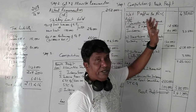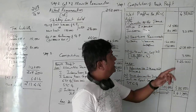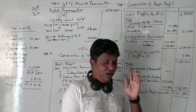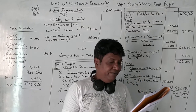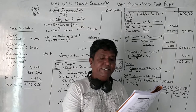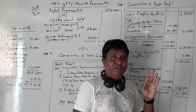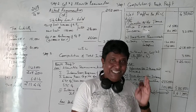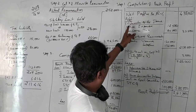Step one: Computation of book profit. Net profit is required and is given as Rs. 4,38,000. Now read the debit side of the profit and loss account one by one. For office expenses, there is an adjustment: Rs. 12,500 is not deductible by virtue of sections 30 to 37. Since it is not a business expense, it was not deducted, so we are adding it back.